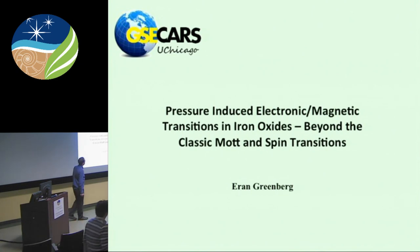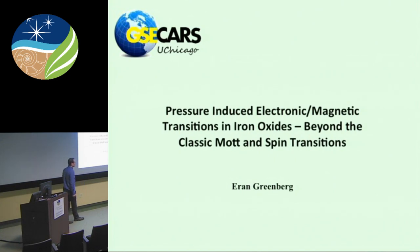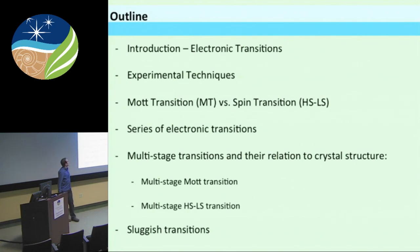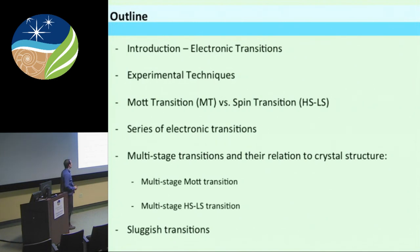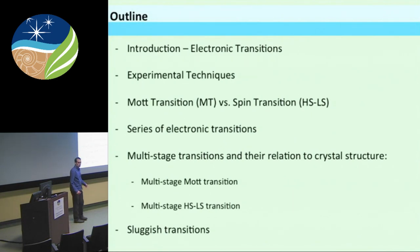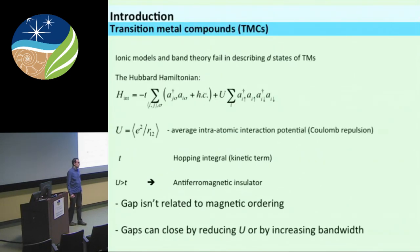Thank you, Alex, for inviting me to speak here. I'm talking about pressure-induced electronic and magnetic transitions in iron oxides. I'm going to talk about what a Mott transition and a high-spin to low-spin transition mean in these systems, and then how it becomes more complex in real materials. I'll give an introduction about electronic transitions, discuss the experimental techniques I used, and compare a Mott transition with a high-spin/low-spin transition. I'll also cover multi-staged transitions, their relation to crystal structure, and one final example about a sluggish transition.